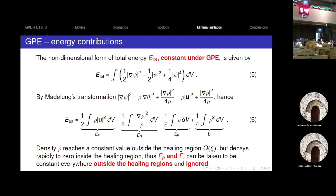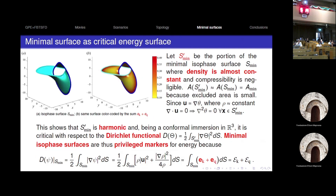What is the link between this and minimal surfaces? On the left we have the Hopf link, and the surface of minimal area is an isophase surface. I take all possible isophase surfaces connecting the two vortices, compute their areas, and find the minimum as a function of the phase value θ. Neglecting the small region around the vortex where density changes very quickly, we are left with S′_min — the part of the minimum surface where density is almost constant. From the continuity equation, if density is almost constant, the velocity field is divergence-free, and since u is the gradient of the phase, the Laplacian of the phase equals zero. Since we look at isophase surfaces, this means S′_min is harmonic and therefore critical with respect to the Dirichlet functional.